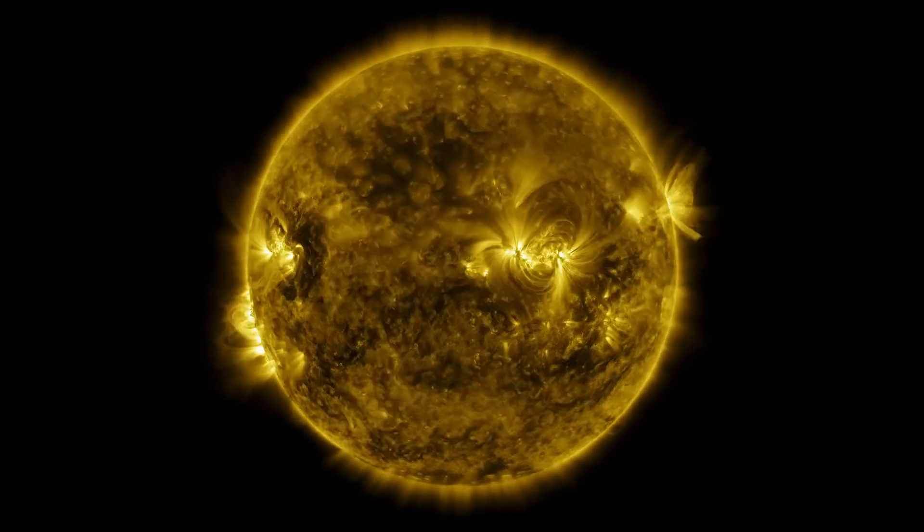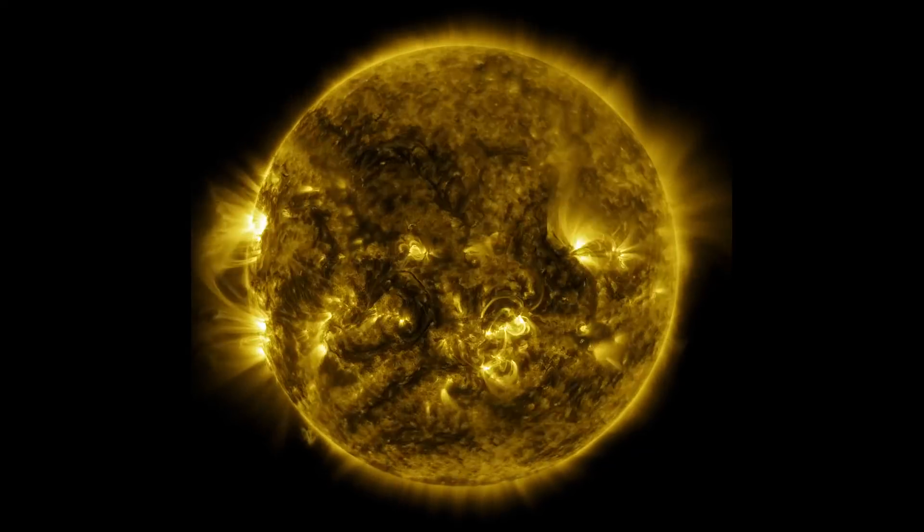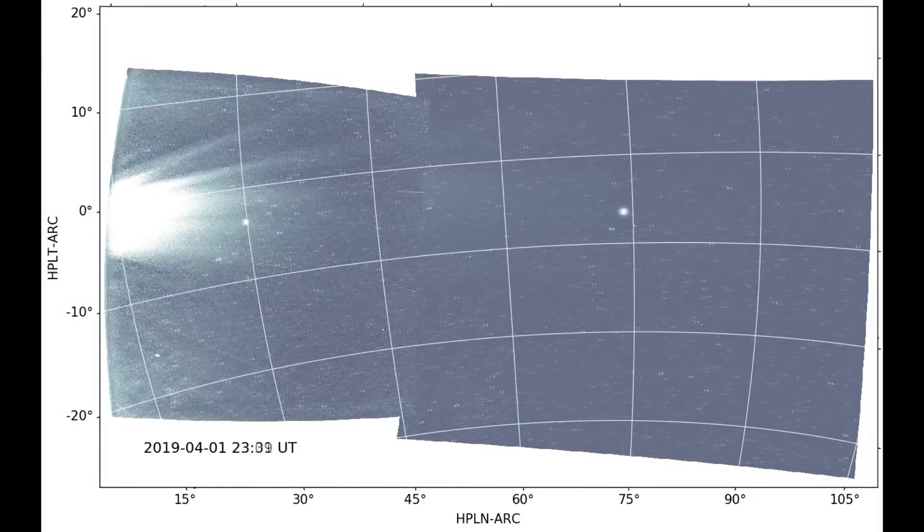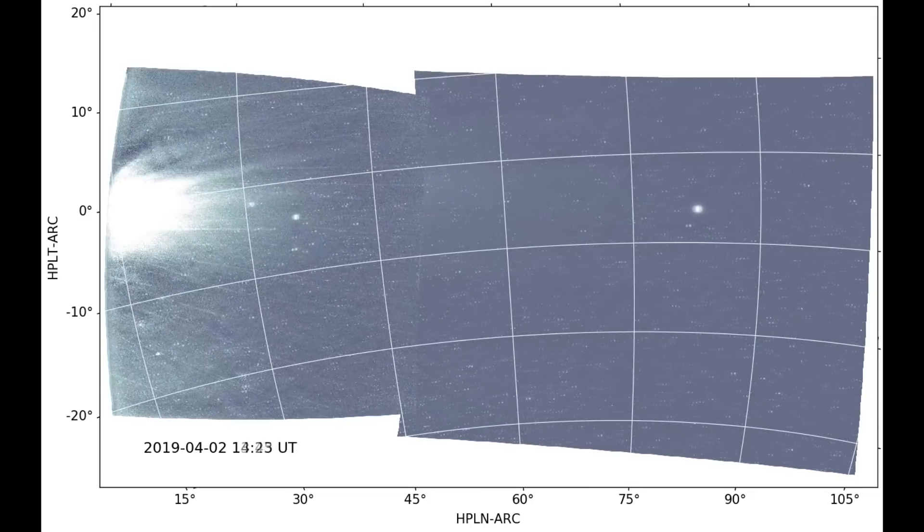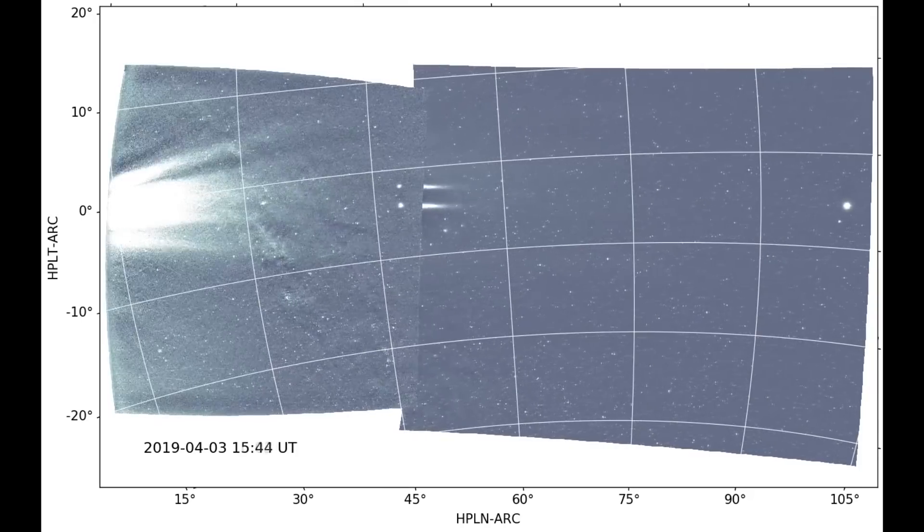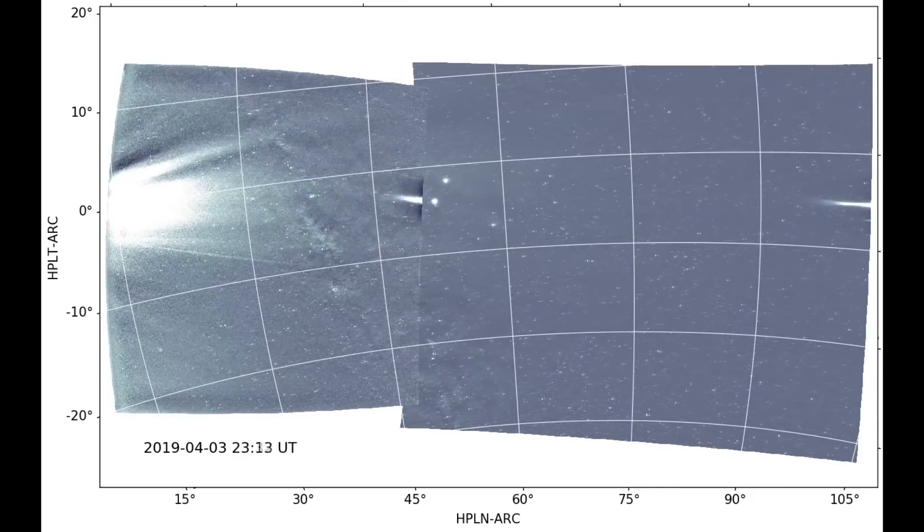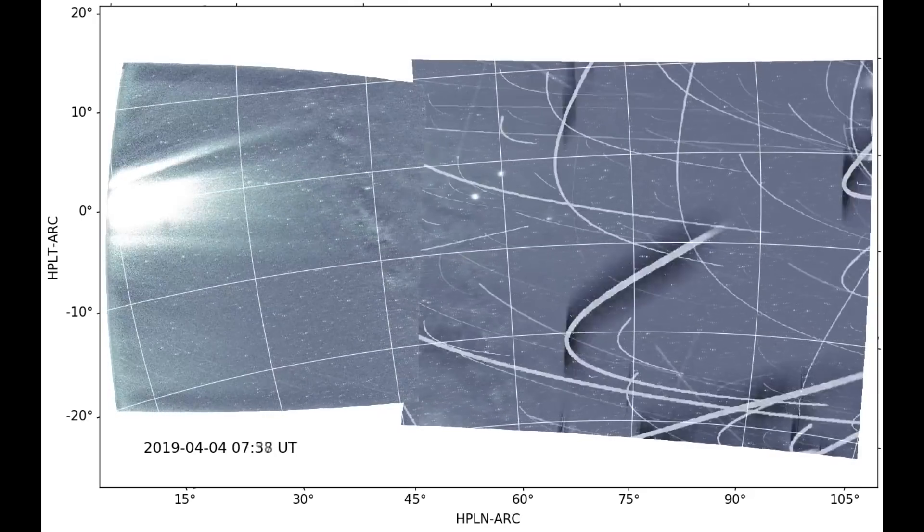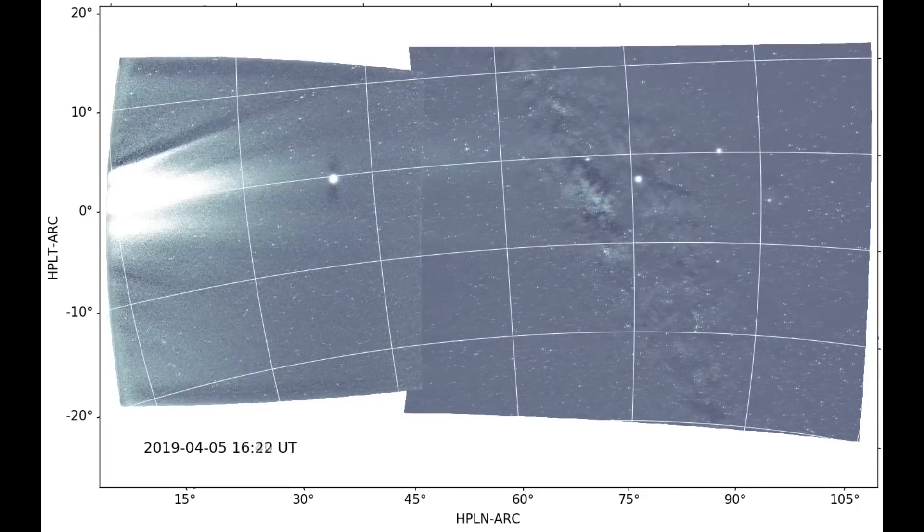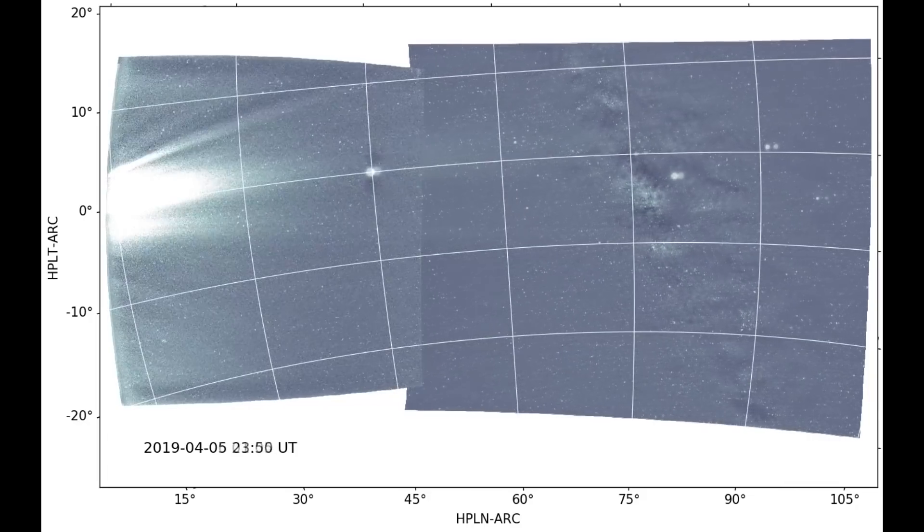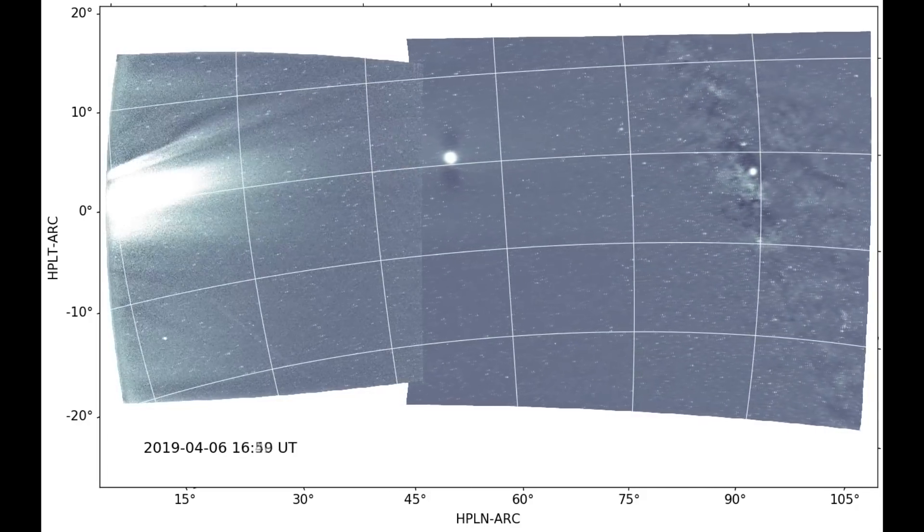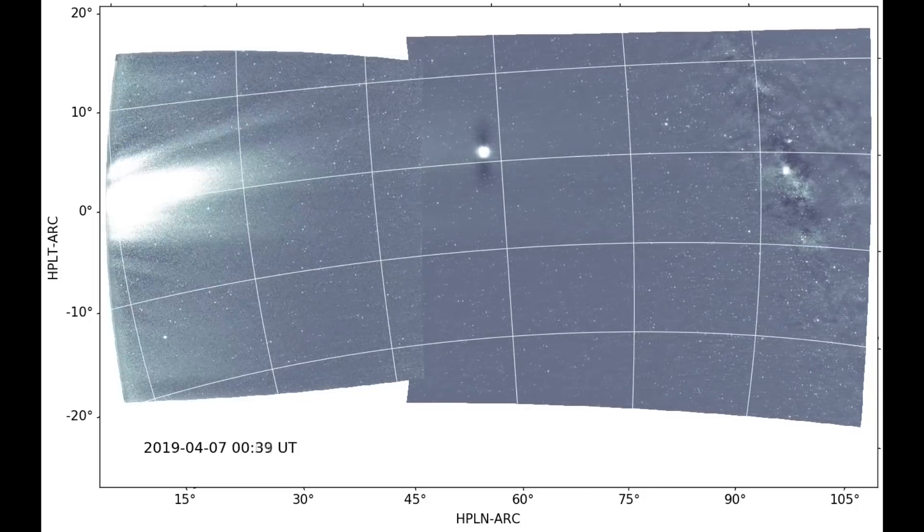Right now, we only get hours of warning from spacecraft that are sitting at the Lagrange point between the sun and the Earth. We may see a flare. We may think that it's dangerous, but we don't know whether the cloud is actually going to hit us until we actually get it bumping into satellites that are between us and the sun and give us the details on the cloud. Because it's entirely possible these things will miss the Earth. And it's, in fact, far more common.